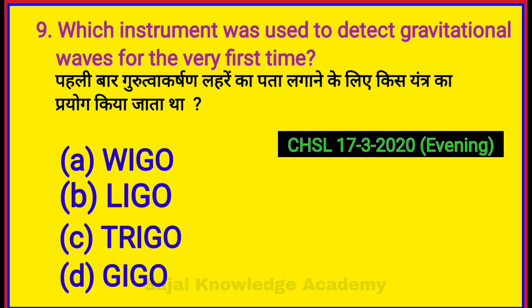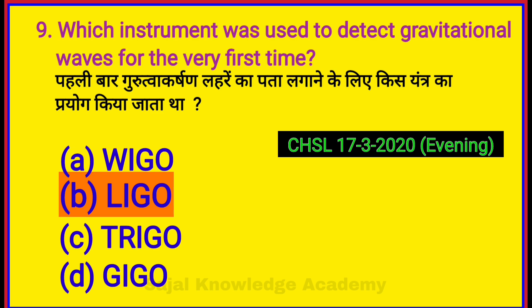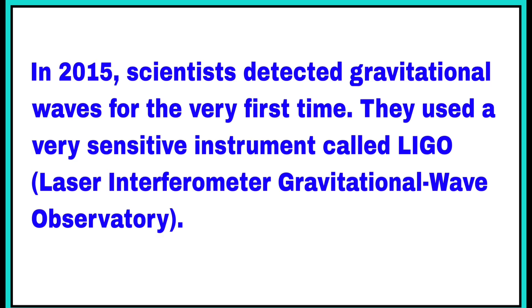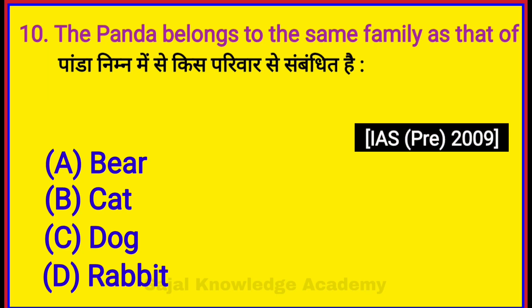Which instrument was used to detect gravitational waves for the very first time? Option B: LIGO. The panda belongs to the same family as that of? Option A: Bear.